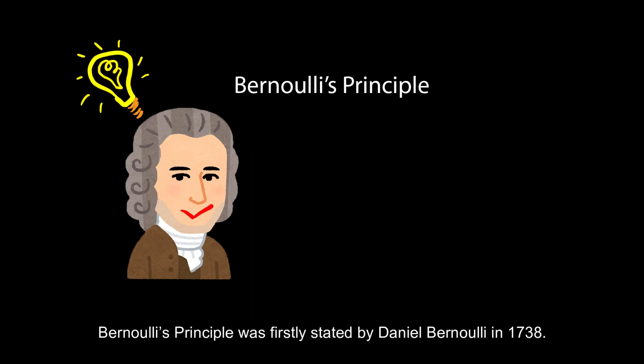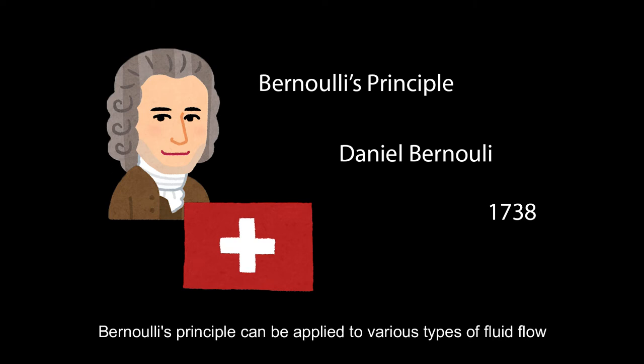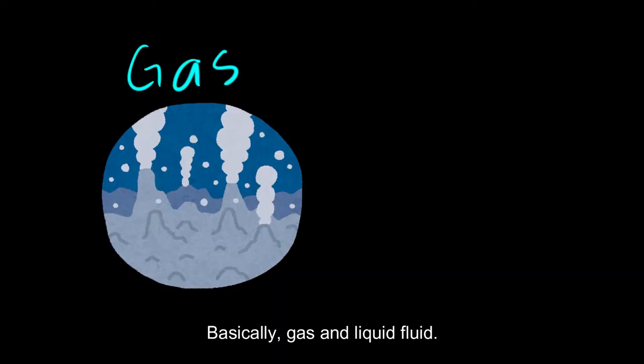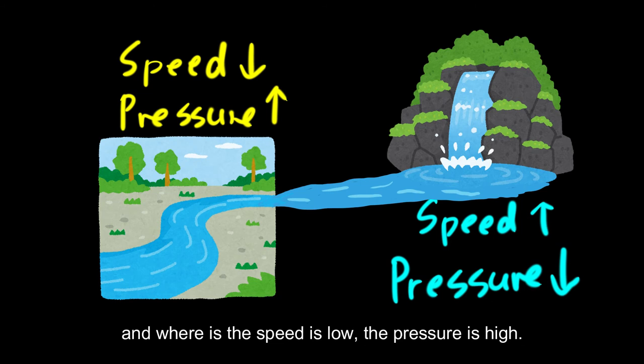The Bernoulli Principle was first stated by Daniel Bernoulli in 1738. It can be applied to various types of fluid flow, basically gas and liquid fluid. The Bernoulli Principle states that when the speed of a fluid is high, the pressure is low, and when the speed is low, the pressure is high.